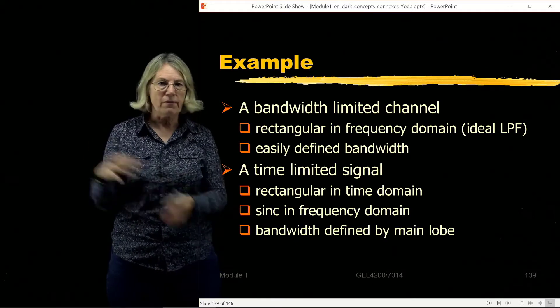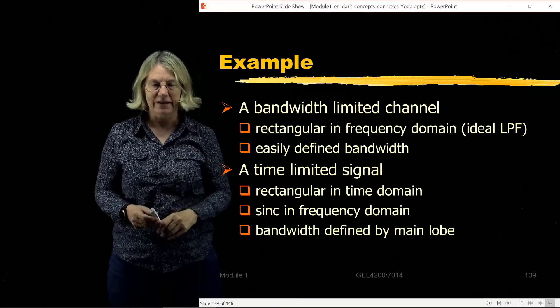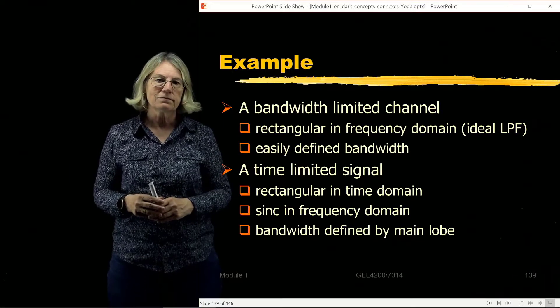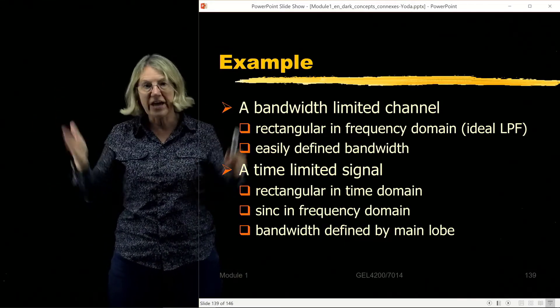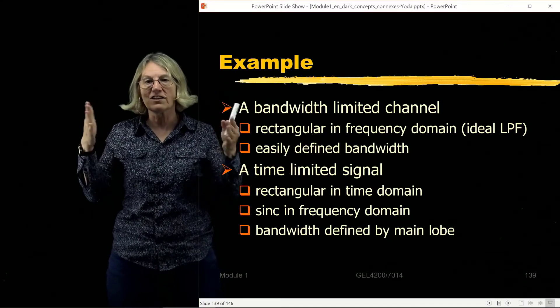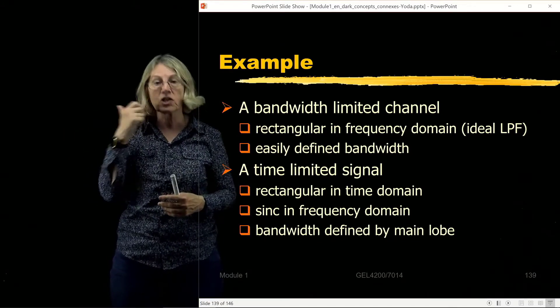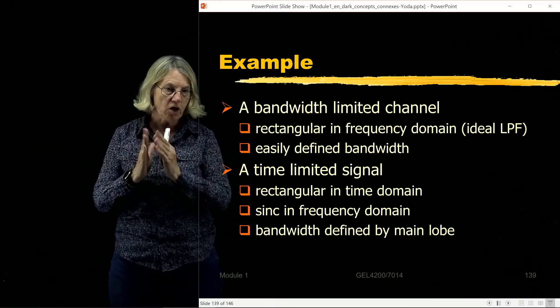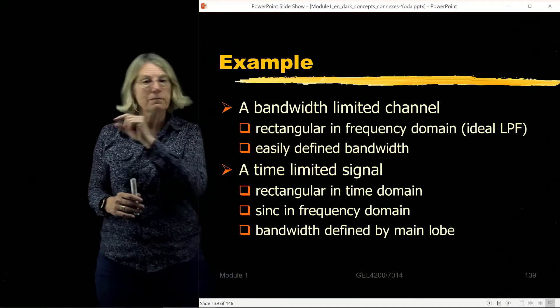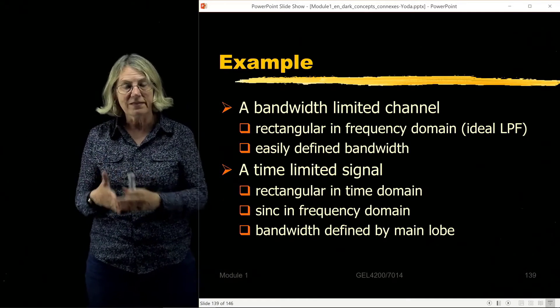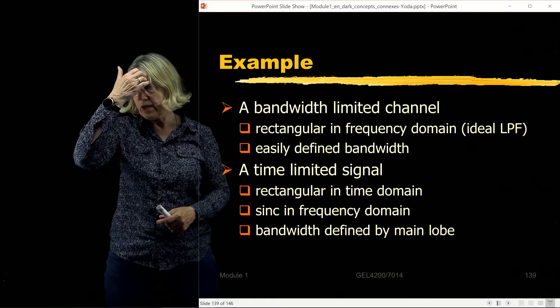I'm going to give you some numerical examples that I ran through MATLAB. In this numerical example, I'm going to take a bandwidth limited channel, a channel that only supports certain bandwidths. The support I'm going to look at is going to be rectangular in the frequency domain. So this is what we saw as an ideal low-pass filter. This is the channel I'm going to be modeling. The bandwidth of an ideal low-pass filter is very well defined. There's a certain cutoff frequency. Now I'm going to look at a time-limited signal, one pulse, definitely limited in time.